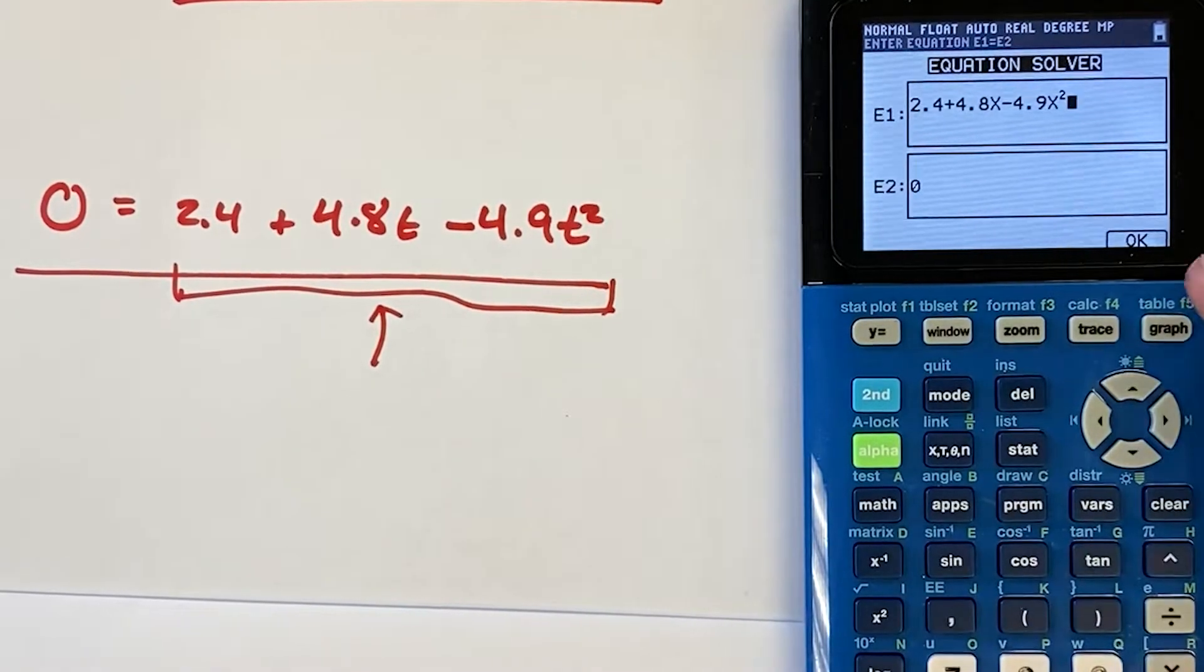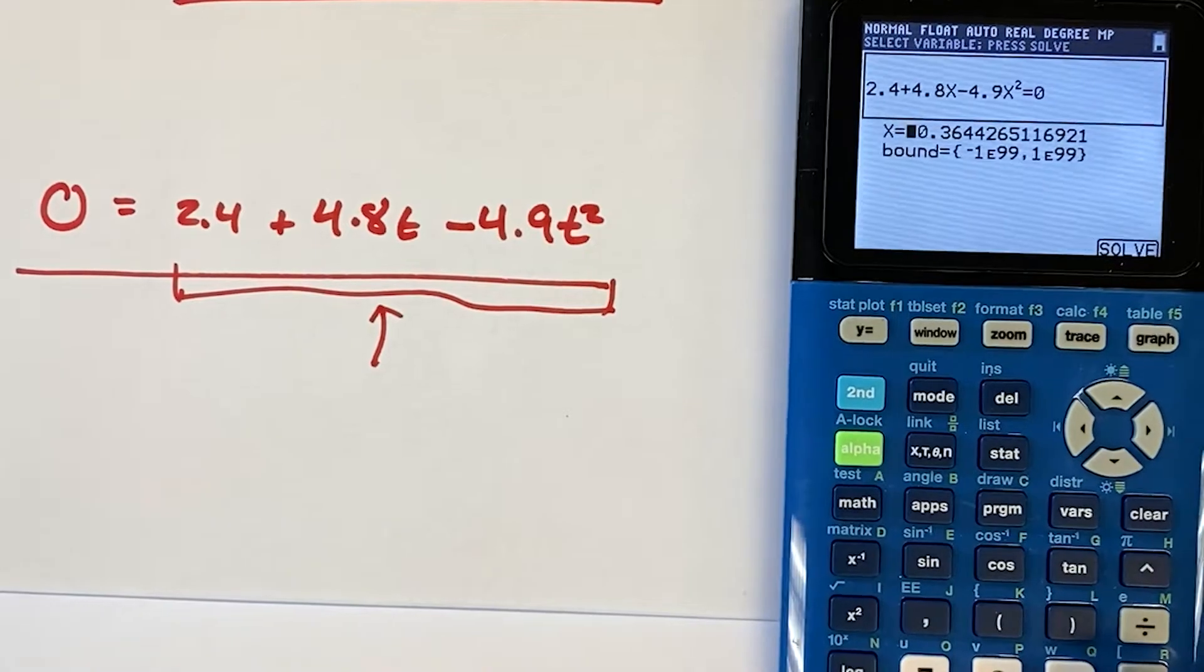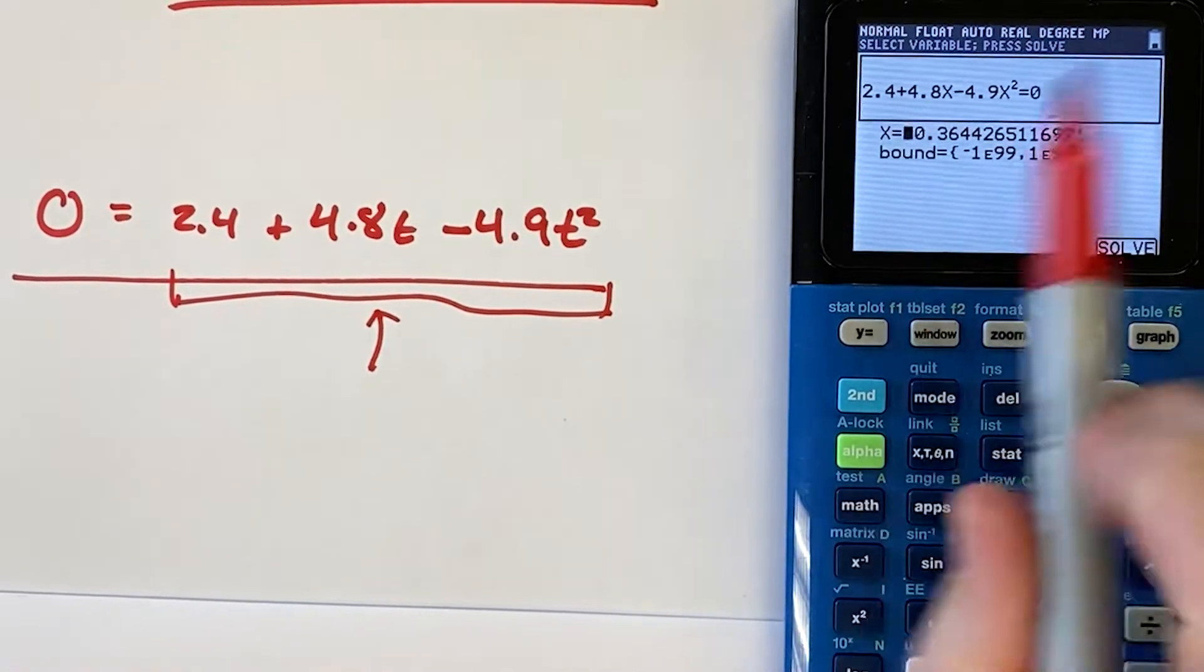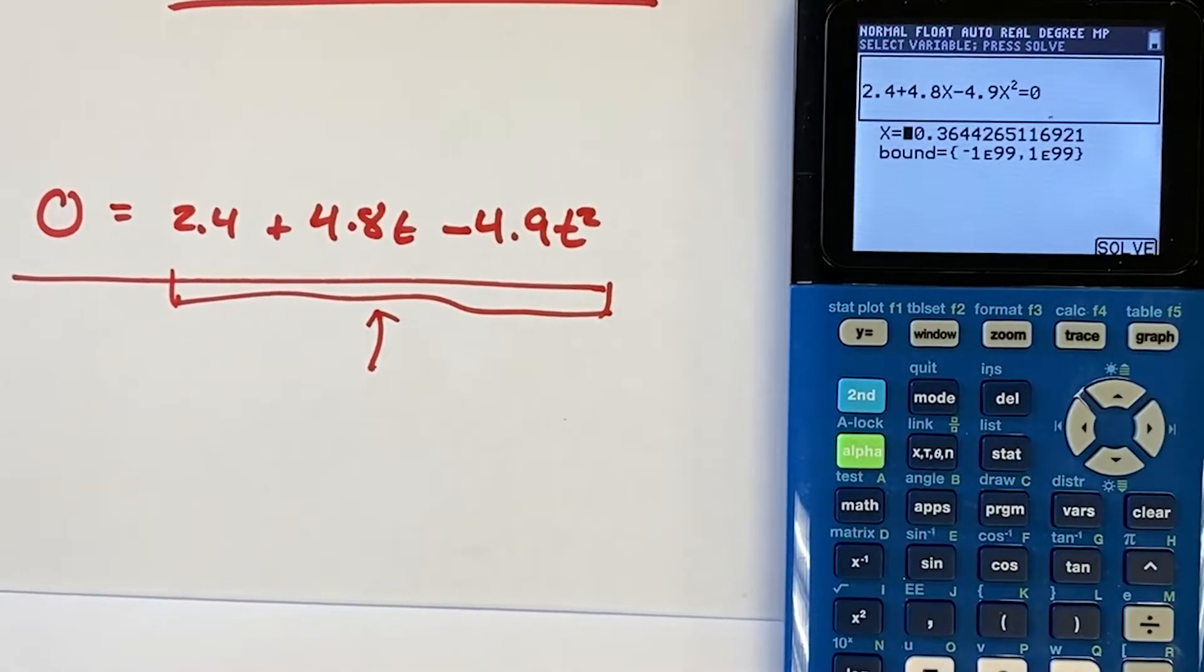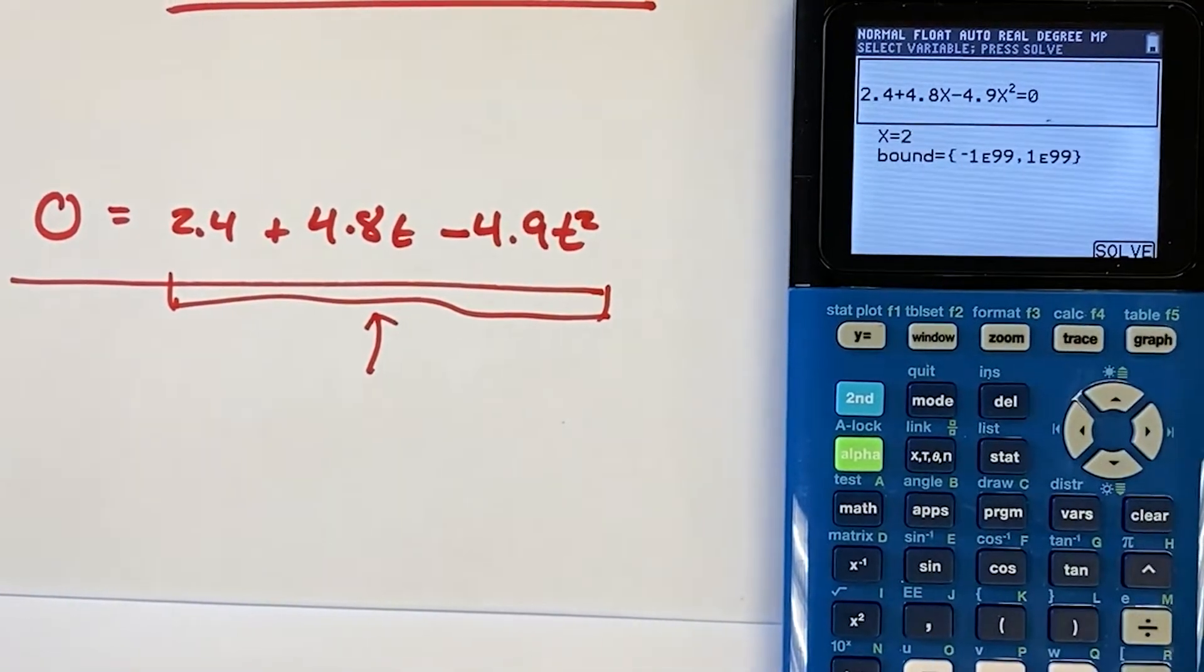And now I'm going to click the OK. And to click the OK button, I'm going to click the graph button right here. And now what I'm going to do is it gives me an X. And if you see the X here, it's between negative 1 to the minus 99th and 1. So I'm going to make a guess. I'm going to say 2.